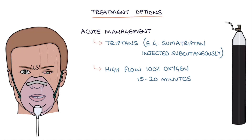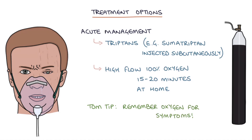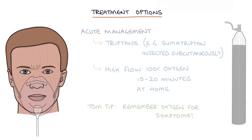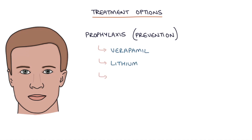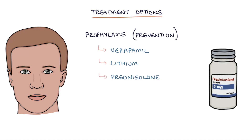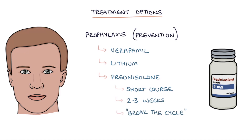Patients are often given oxygen to keep at home to use during headaches. My Tom tip here is to remember that oxygen is used to treat the symptoms of a cluster headache — this is quite a unique fact that can come up in exams. There are also options for prophylaxis to prevent cluster headaches, including verapamil, lithium, and prednisolone, which can be used for a short course of two to three weeks to try and break the cycle during a cluster of attacks.